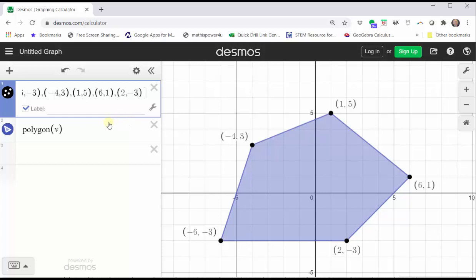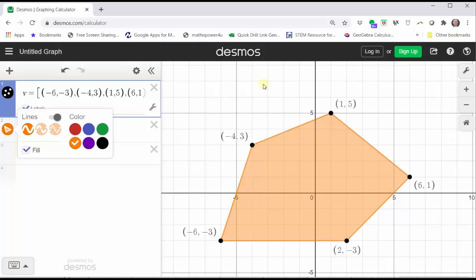If you want to change the color of the polygon, simply click on the blue circle on the left of the polygon function and select a different color. I hope you found this helpful.